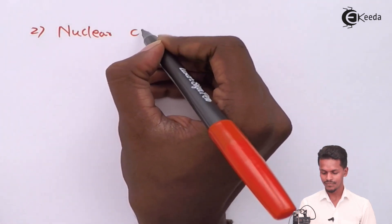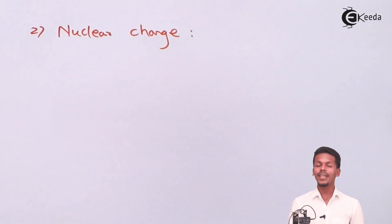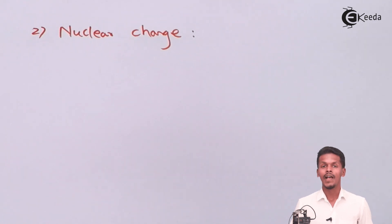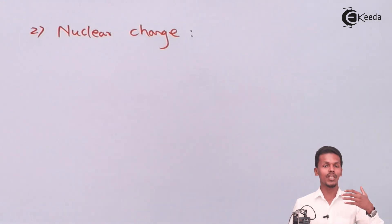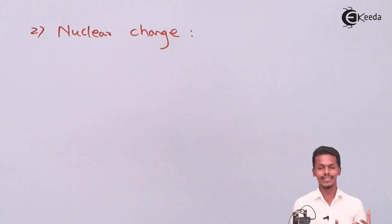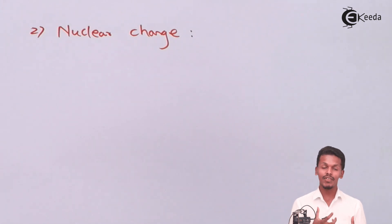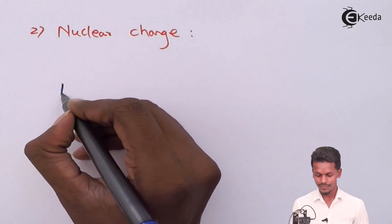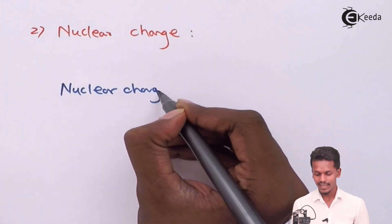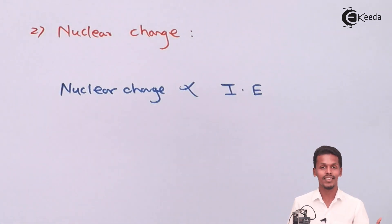The second factor is nuclear charge, which is the force of attraction between the nucleus and the outermost electron that holds the electron within the atom. If the nuclear charge is more, we require more energy to remove that electron. Therefore, nuclear charge is directly proportional to ionization enthalpy — if nuclear charge is more for a particular atom or ion, the ionization enthalpy will also be more.